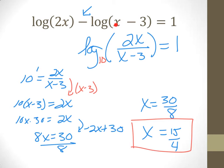15 over 4 is 3 and change, which is more than the 3 you're taking away, so that is positive as well. We're okay. We get to keep 15 over 4.